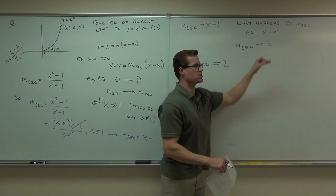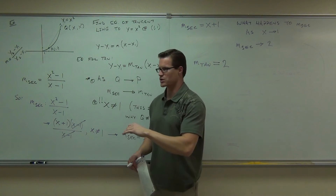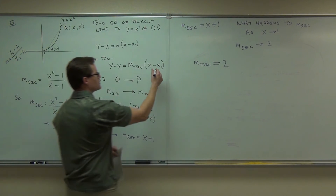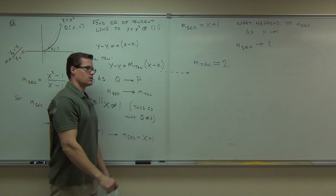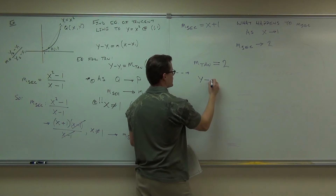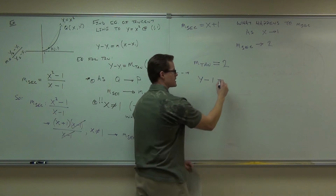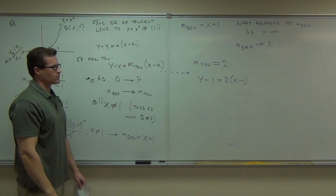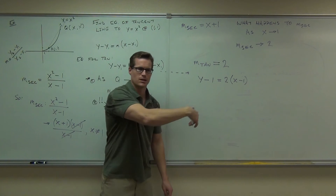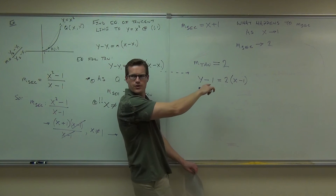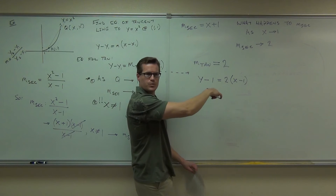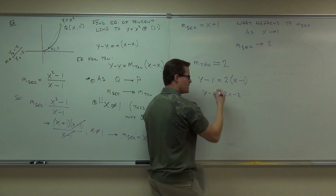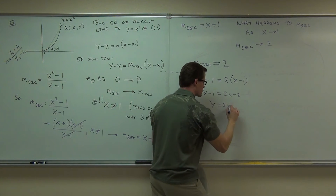Because the secant is approaching two, we say we've got this — that's called a limit. Now, can you fill out the tangent line equation using that information? We know it would be y minus y₁, which is 1, equals the slope of the tangent — we know it's 2 — times x minus 1. We don't generally leave things in point-slope form, so we'll solve it. Our point is (1,1) and our slope is now 2. That gives us y minus 1 equals 2x minus 2, and adding 1, y equals 2x minus 1.